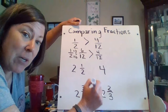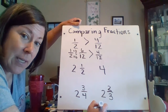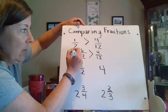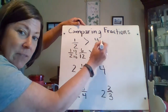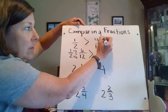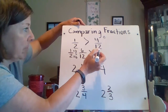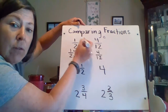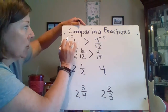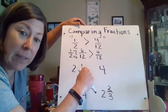Also, remember the butterfly — the shortcut that we used in comparing fractions. In the butterfly, we do the crisscross. 2 times 4 gives us 8. 12 times 1 is 12. 12 is greater than 8, which matches our work here that we already found.